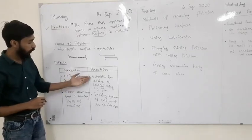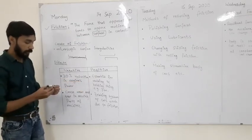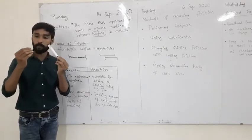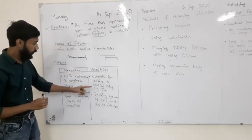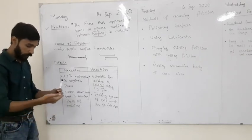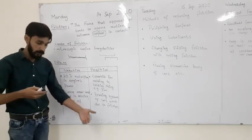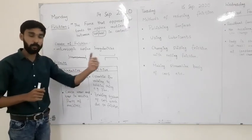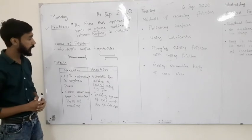What are the positive effects of friction? Friction is needed for walking and holding things. When I hold this marker, if there is no friction between my fingers and the surface of the marker, it will slip away. Similarly, when you walk, friction between the sole of your shoes and the floor gives you grip. But if the ground is slippery, there is no friction and walking is not possible.